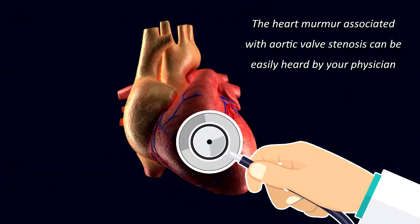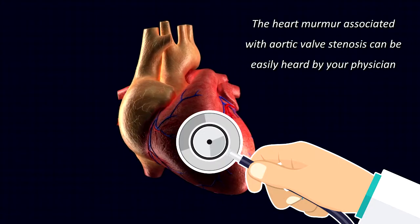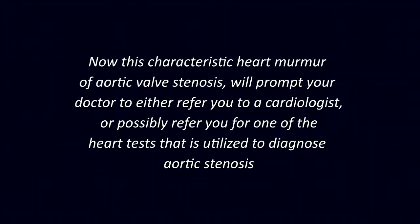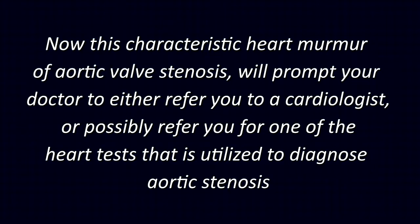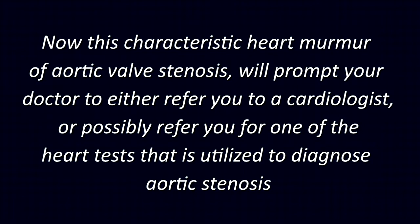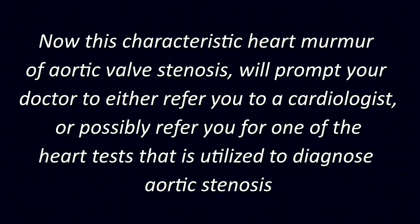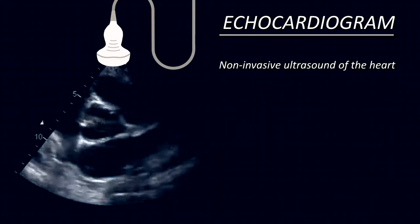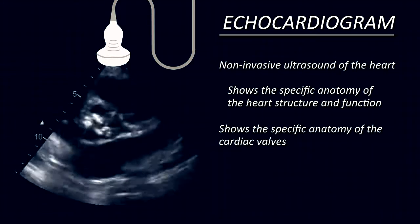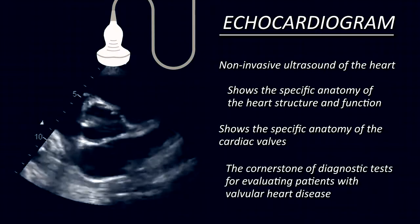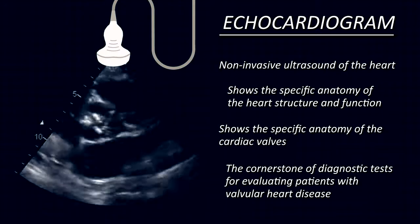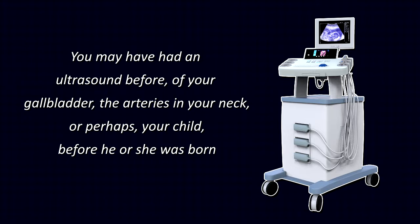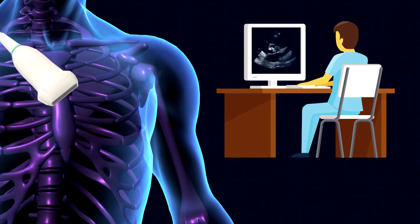In the case of aortic valve stenosis, when blood is forced across the narrowed valve, a fairly loud and characteristic murmur can be easily heard by your physician. This characteristic murmur will prompt your doctor to either refer you to a cardiologist or order an echocardiogram — a very simple, non-invasive ultrasound of the heart. It shows us the specific anatomy of heart structure and function, as well as the structure and function of the cardiac valves. You may have had an ultrasound before of your gallbladder, neck arteries, or perhaps your child before birth.